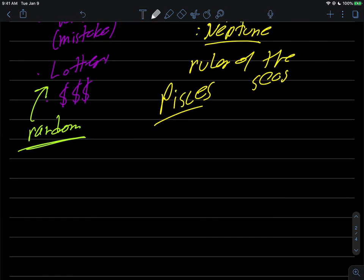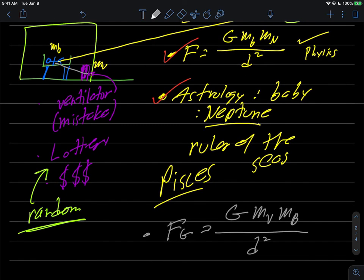So in the third case here, we have another issue at play here where there's a force of gravity between the ventilator, G times mv (the mass of the ventilator) times the mass of the baby, divided by their distance squared. So what I'm sort of doing here is I'm colliding three things for you here.